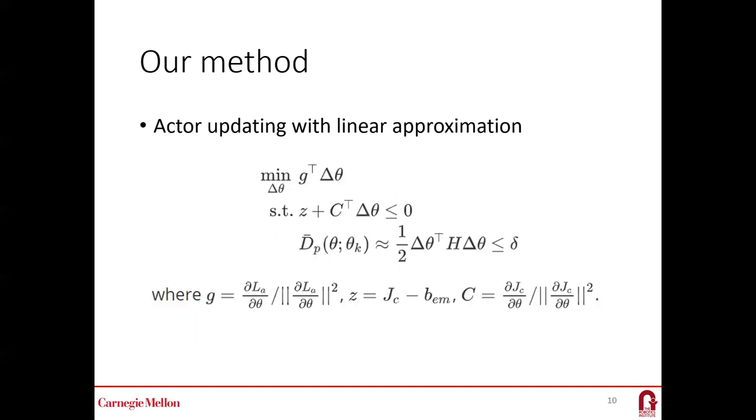We use the Lagrangian dual problem and KKT condition to compute the feasible solution. If the feasible solution exists, we update the actor by this equation.